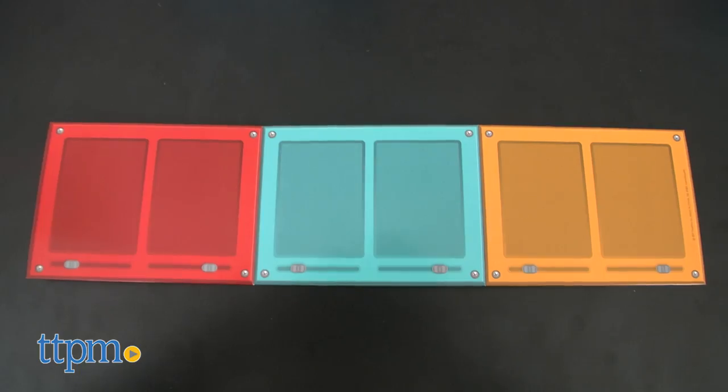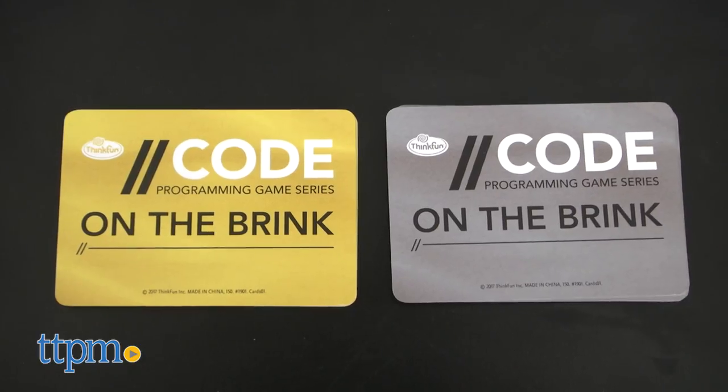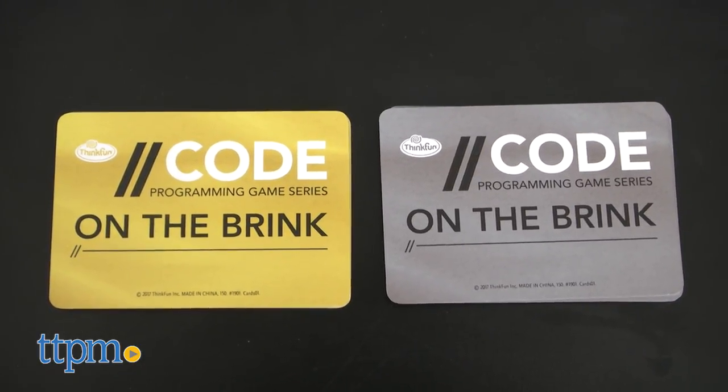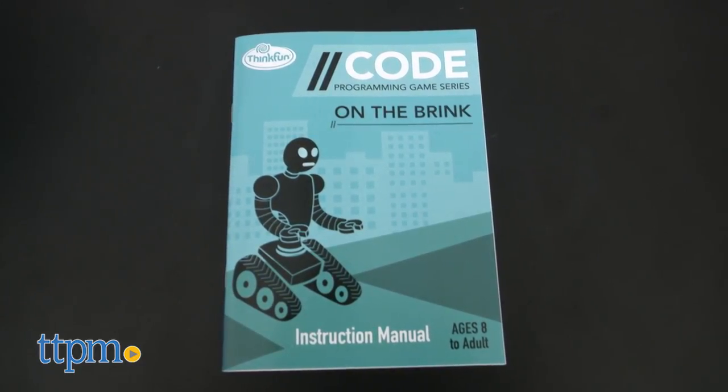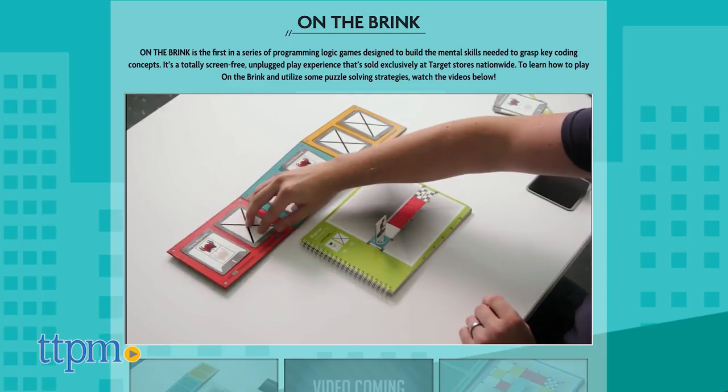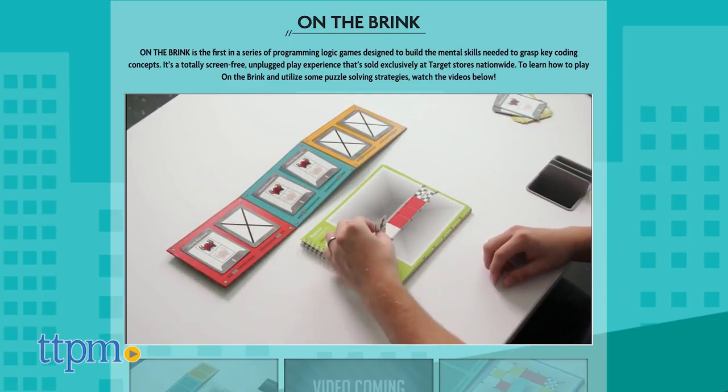The game comes with a control panel, booklet of 40 game boards, 18 movement cards from beginner to advanced, one robot token and the all-important instruction manual or you could use the YouTube video. This is a must because the game can be quite challenging to understand at first.